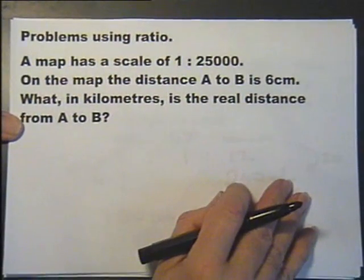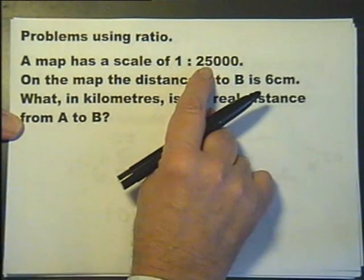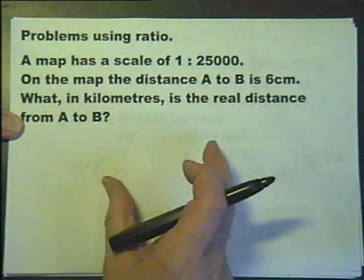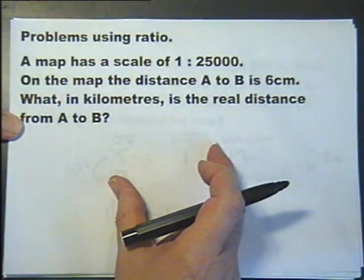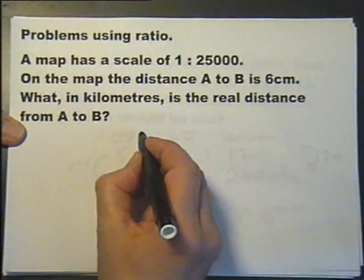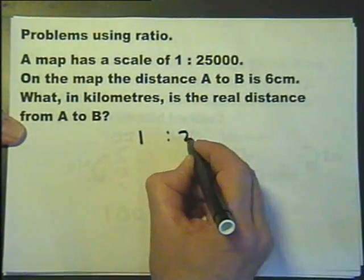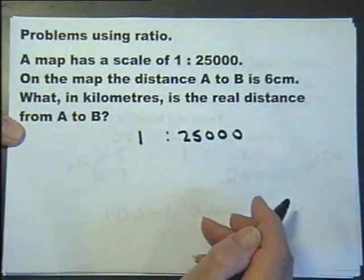And the last little question. A map has a scale of 1 to 25,000. On the map, the distance measured A to B is 6 centimeters. What, in kilometers, is the real distance from A to B? So, 1 centimeter would be 25,000 centimeters in the real world.